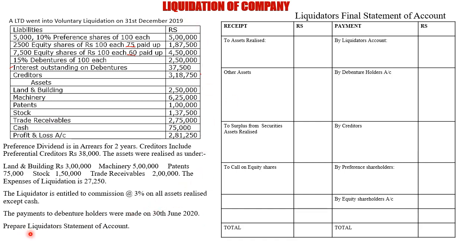The task is to prepare the liquidator's statement of account. On the debit (receipt) side we have: assets realized, other assets, surplus on securities, and call on equity shares. On the payment side: liquidator's account, debenture holders, creditors, preference shareholders, and equity shareholders.